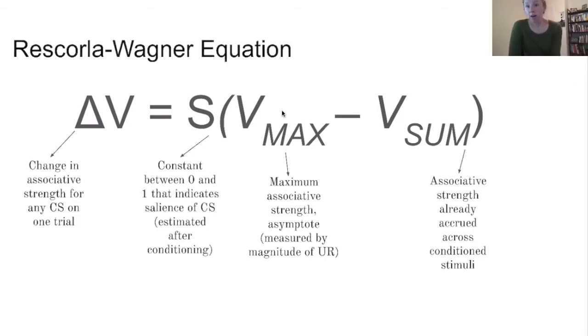So you've got the equation right here, you can see it. It has delta V, which is the change in associative strength for any given trial. So this is the associative strength of the conditioned stimulus. As it acquires a conditioned stimulus status and elicits the response, it's how strong that response is. But the delta V is the change for a specific trial.